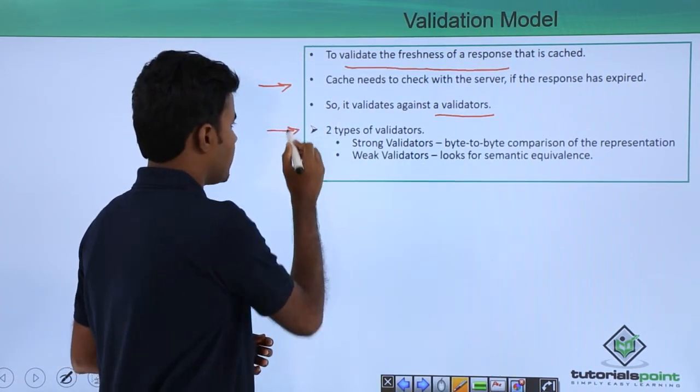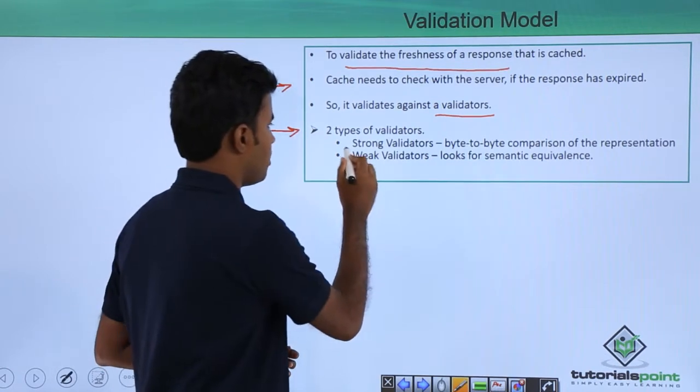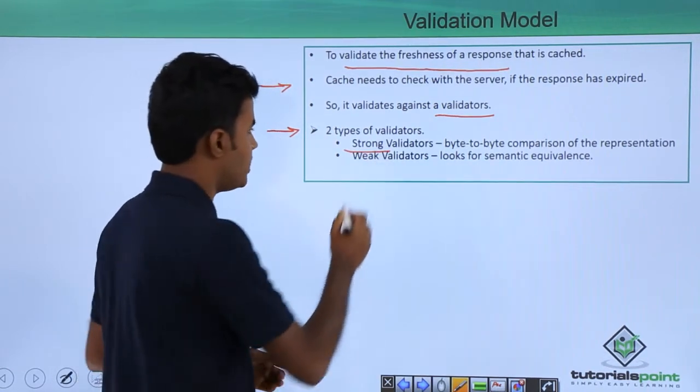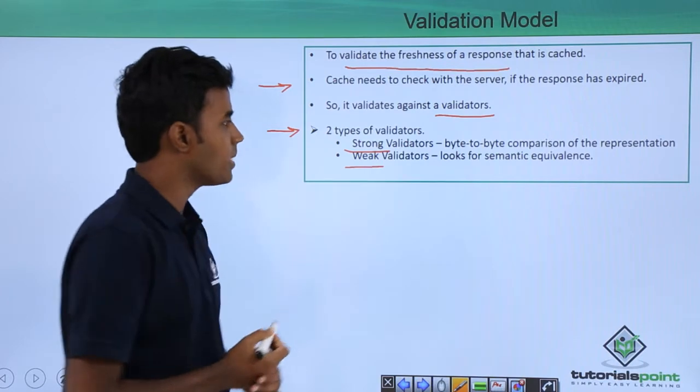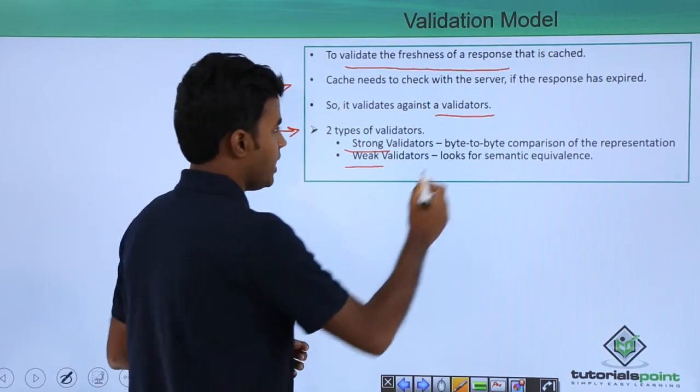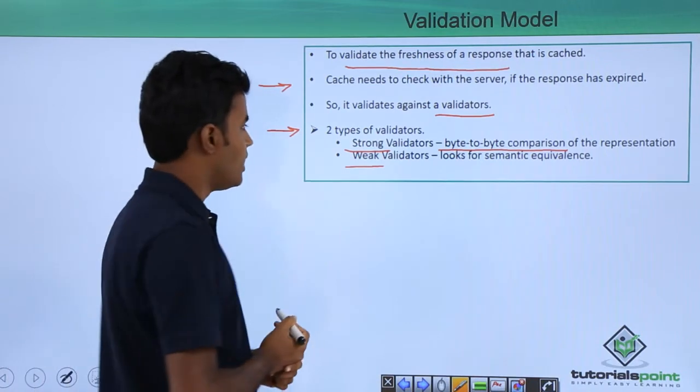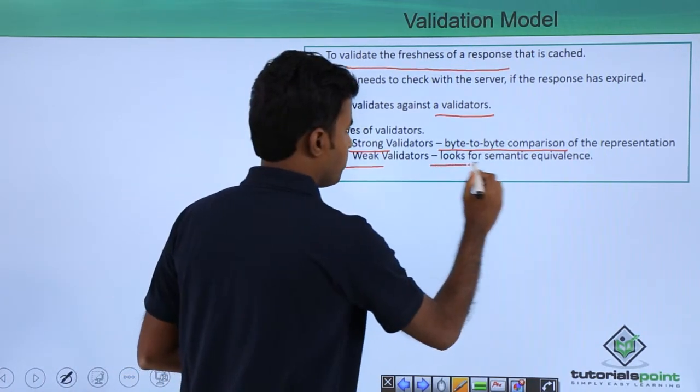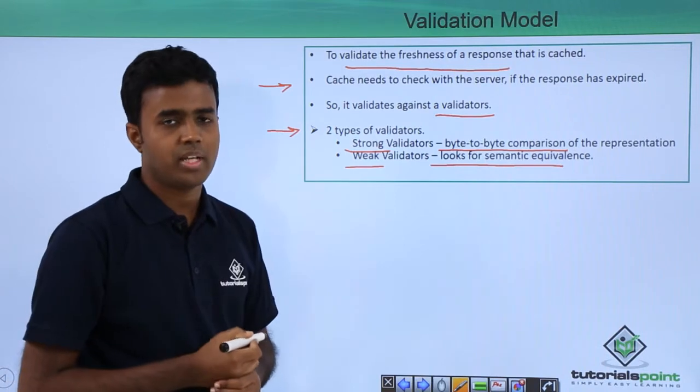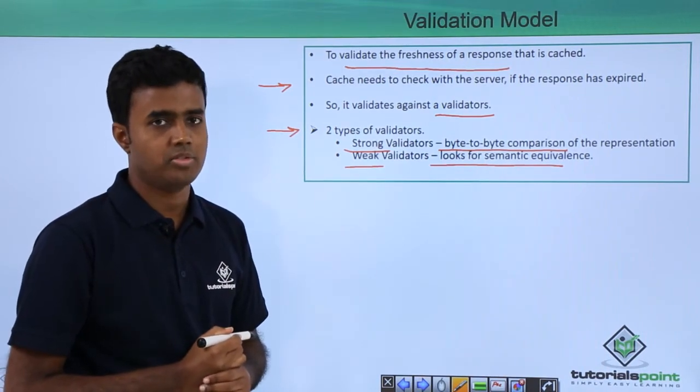There are two types of validators that can be used. One is the strong validator and the next one is the weak validator. Strong validator does a byte-to-byte comparison of the representation whereas a weak validator just looks for semantic equivalence, and most of the time strong validators are used.